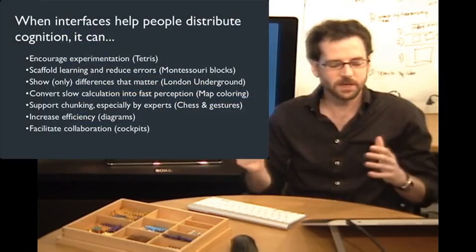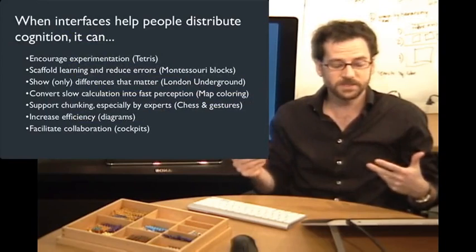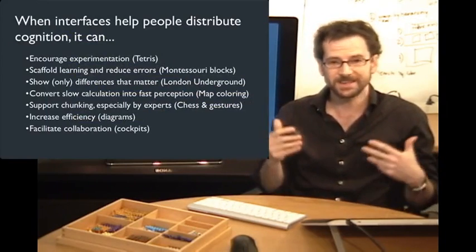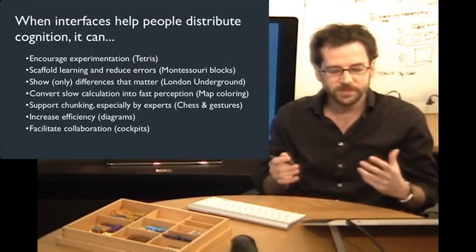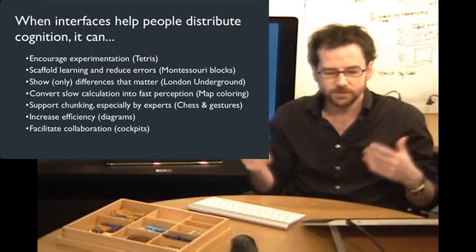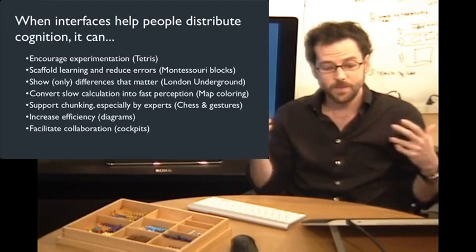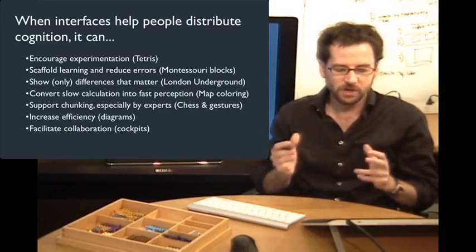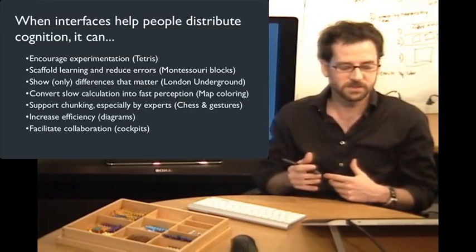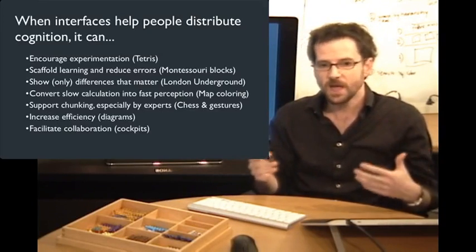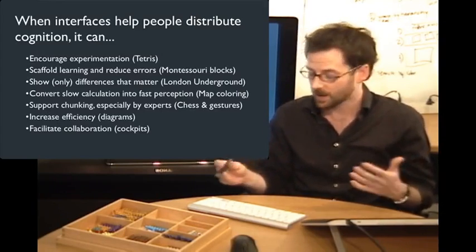When interfaces help people distribute cognition, it can encourage experimentation like we saw in Tetris. It can scaffold learning and reduce errors like we saw with the Montessori blocks. It can show only the differences that matter, like in the London underground map. It can convert slow calculation into fast perception, like we saw with the map coloring. It can support chunking, especially by experts, as we saw with chess and with gestural interfaces. It can increase efficiency, as we saw with diagrammatic representations. And it can facilitate collaboration like we saw in the cockpit.